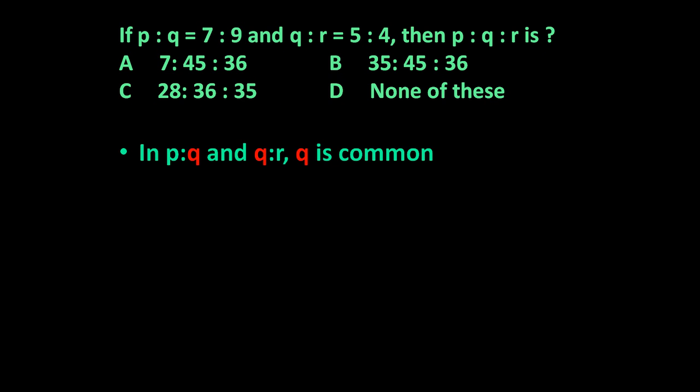To answer such type of question, just let us see P is to Q and Q is to R. In these, Q is common. Their ratio given is 7 is to 9 and 5 is to 4. Q is common in both, but here Q means 9 and here Q means 5.